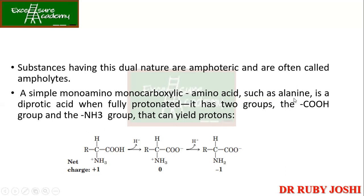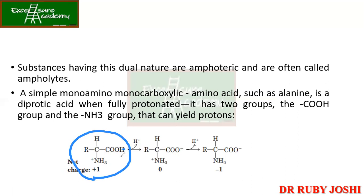Amino acids like alanine are diprotic acids. When fully protonated they have two groups — COOH and NH3 — that can give up H plus. The first proton is released from the COOH group, and the second from the NH3 plus group. Always remember which group has the lowest energy to release H plus — that goes first. After the second proton is released the overall charge becomes minus one.